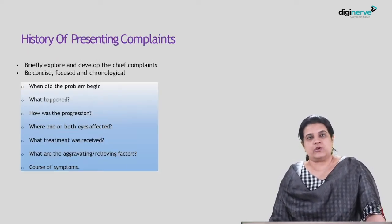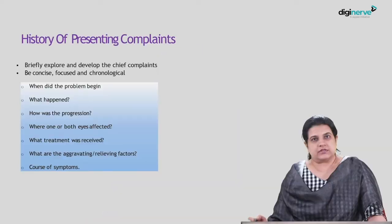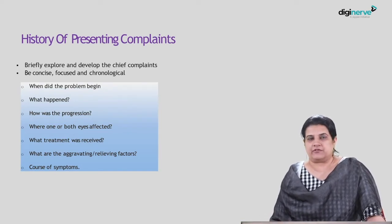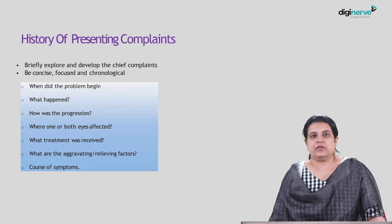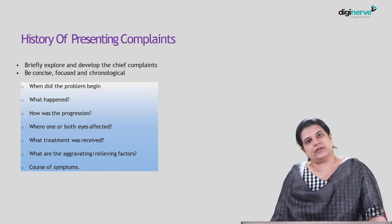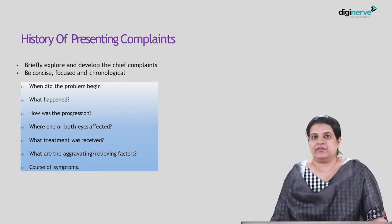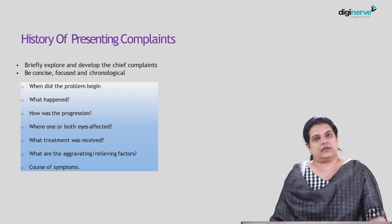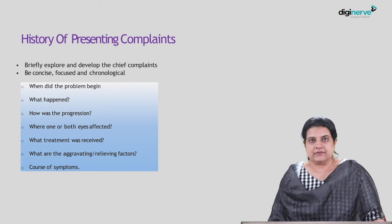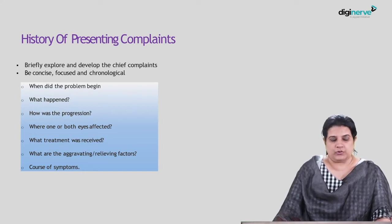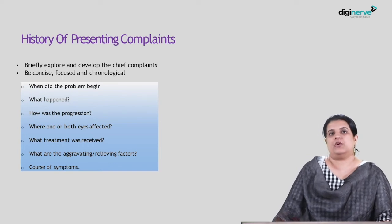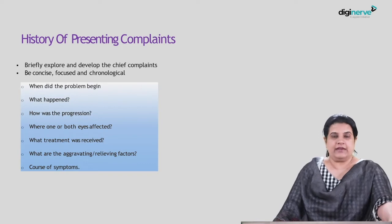When asking history of presenting complaints, briefly develop the timeline for how the patient's eye behaved. For example, if the right eye had redness and watering for a week, the symptoms increased after two days, then decreased three days later — but as they decreased in the right eye, they started developing in the left eye. Track the course of symptoms in each eye. Be concise, focused, and chronological: when did the problem begin, what happened, how did it progress, which eyes were affected, what treatment was received, and what were the aggravating or relieving factors?